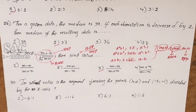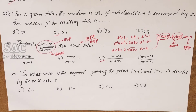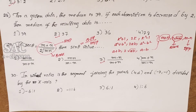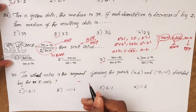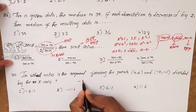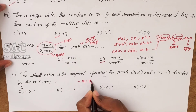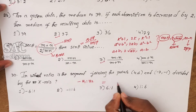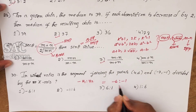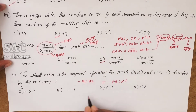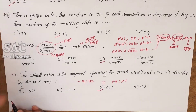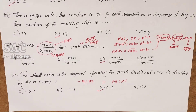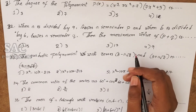Problem 30: in what ratio does the segment joining points (4, 6) and (−7, −1) divide the X-axis? When a segment divides the X-axis, use the y-coordinates ratio: y1 : (−y2) = 6 : 1. So the ratio is 6 : 1.